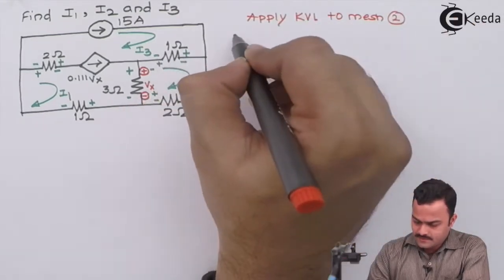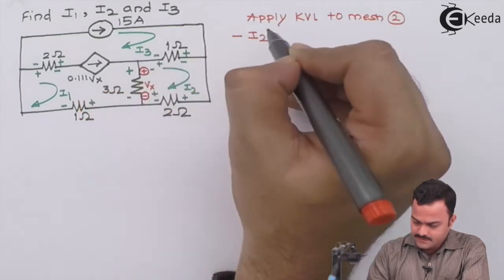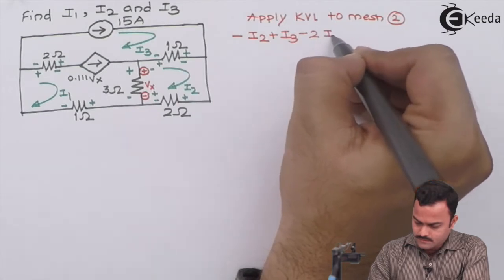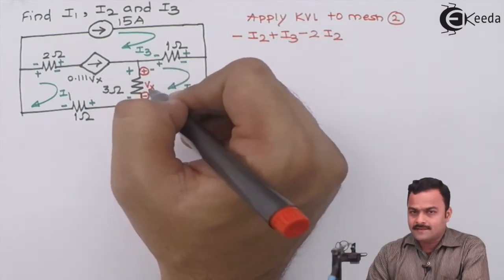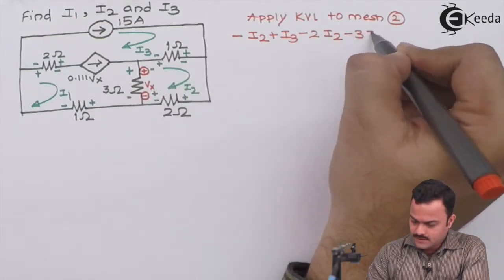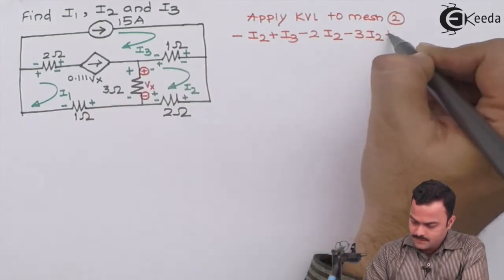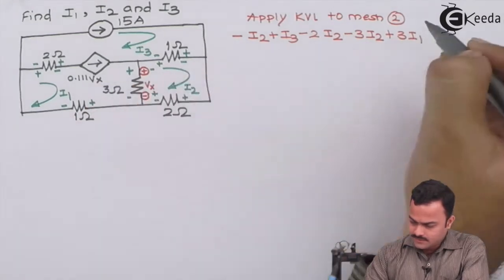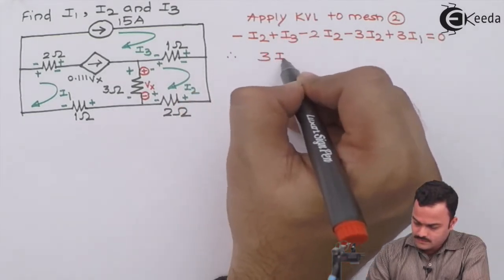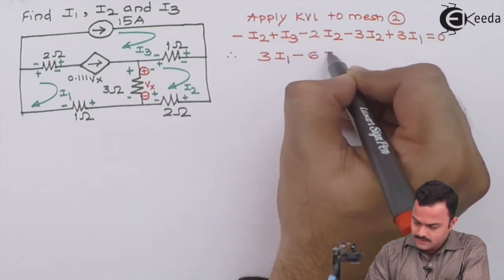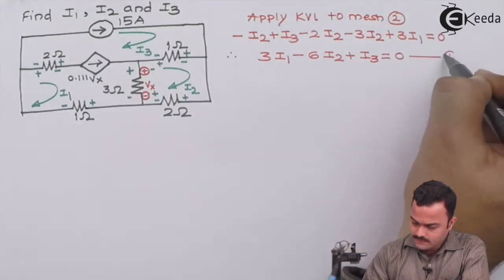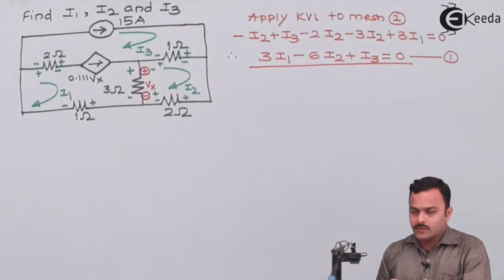Starting KVL on mesh two, focusing on polarities developed by the mesh currents: minus i2, plus i3, minus two i2, minus three i2, plus three i1 equals zero. After simplifying, we get the straightforward equation: i2 + i3 = 0, as equation number one.